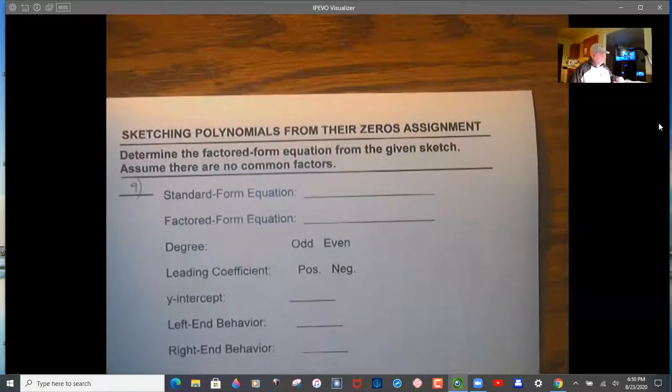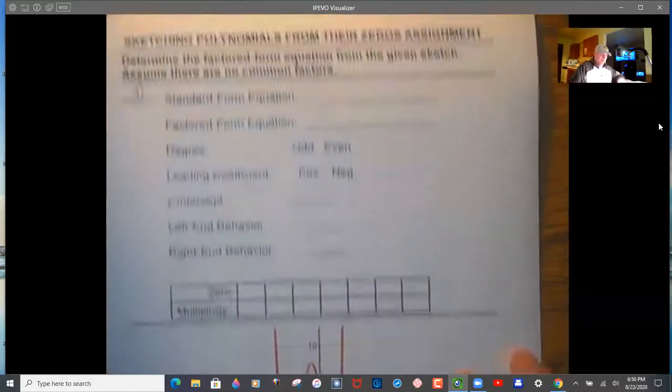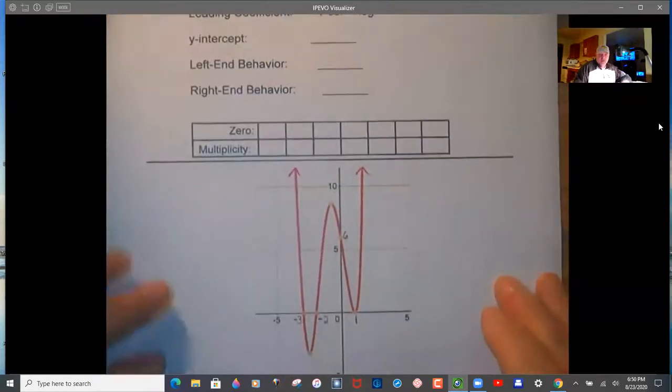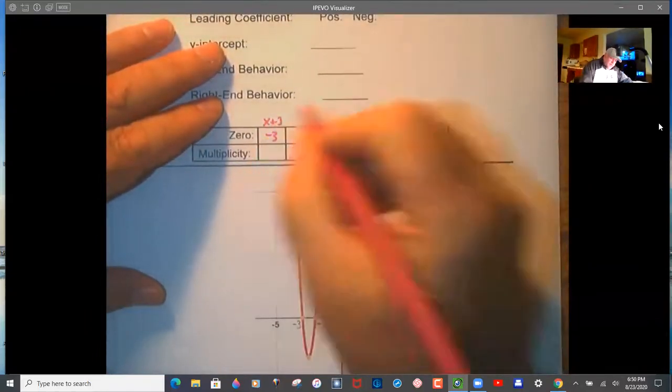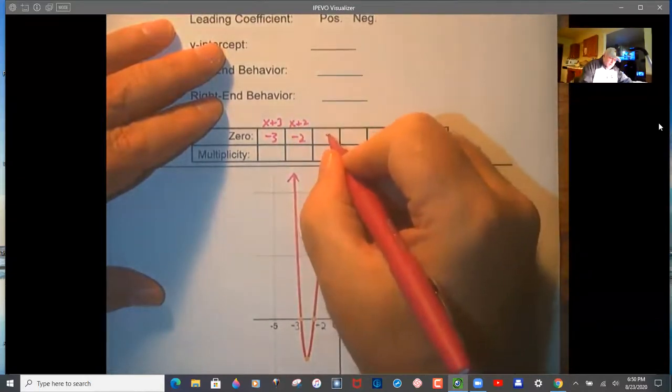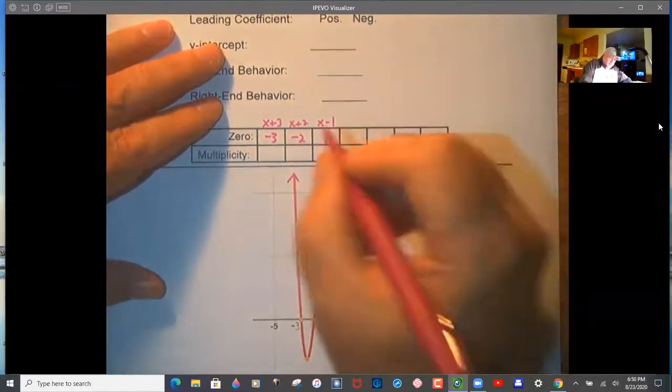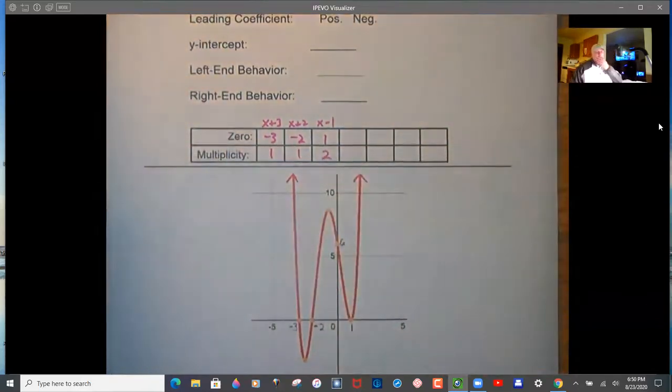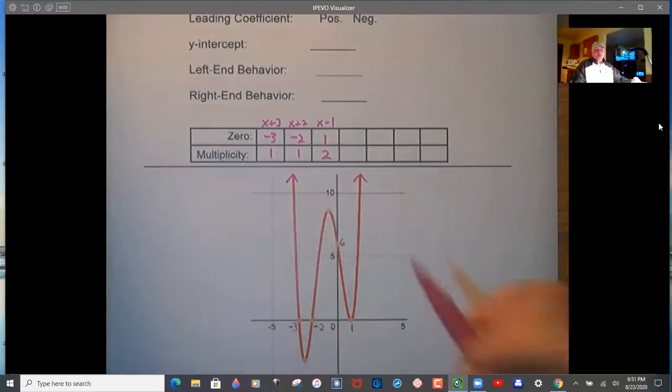Number 9. We have the graph. The first thing you do with the graph is write the zeros in, then the factor above it. -2 is (x+2), and 1 is (x-1). Then the multiplicities: 1, 1, and 2. How do we know 1, 1, and 2 instead of, say, 3, 3, and 4? We know it's not 3, 3, and 4 because it's not flattening out. At 1, if it was 4, you would see it get real flat around 1. This would be flatter here. And here you would see the graph come through.